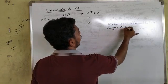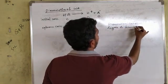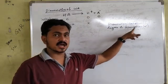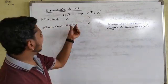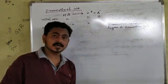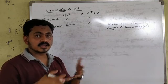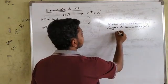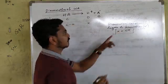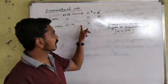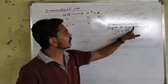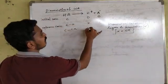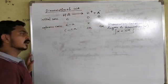The degree of dissociation is represented by alpha. For example, in the exam you will need to write both x and alpha. x is equal to C alpha, where C is the initial concentration and alpha is the degree of dissociation. So x is equal to C alpha. Here Ka is the dissociation constant.